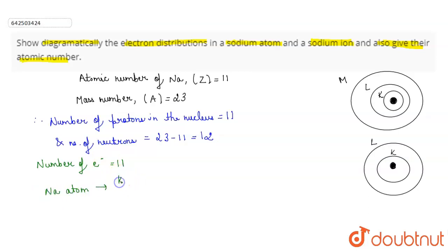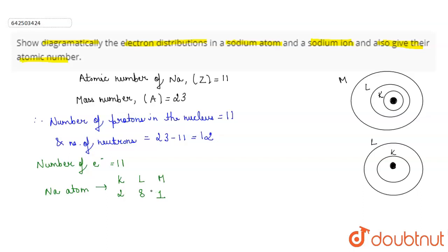Now, the electronic configuration of the sodium atom is: in the K shell there are two electrons, in the L shell there are eight electrons, and in the M shell there is one electron.